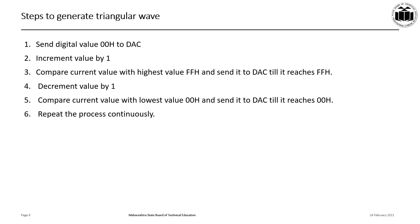The steps to generate a triangular wave are: first, send the digital value 00H to the DAC so that the output of the DAC is 0V. Next, increment this value by 1 — the value sent to DAC becomes 01H. Compare this value 01H with the highest value FFH and send it to DAC. Keep on incrementing the value by 1 and sending it to DAC till it reaches FFH. Then, after the maximum value FFH is sent to DAC, decrement the value by 1 so it becomes FEH. Compare this decremented value with the lowest value 00H and send it to DAC. Keep on decrementing and sending to DAC till the value reaches 00H, and repeat this process continuously.